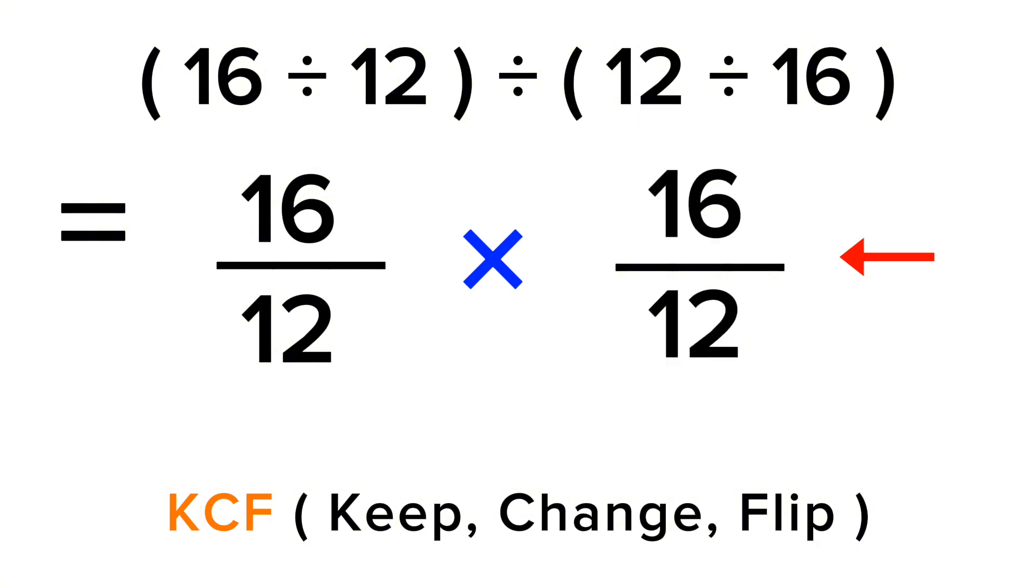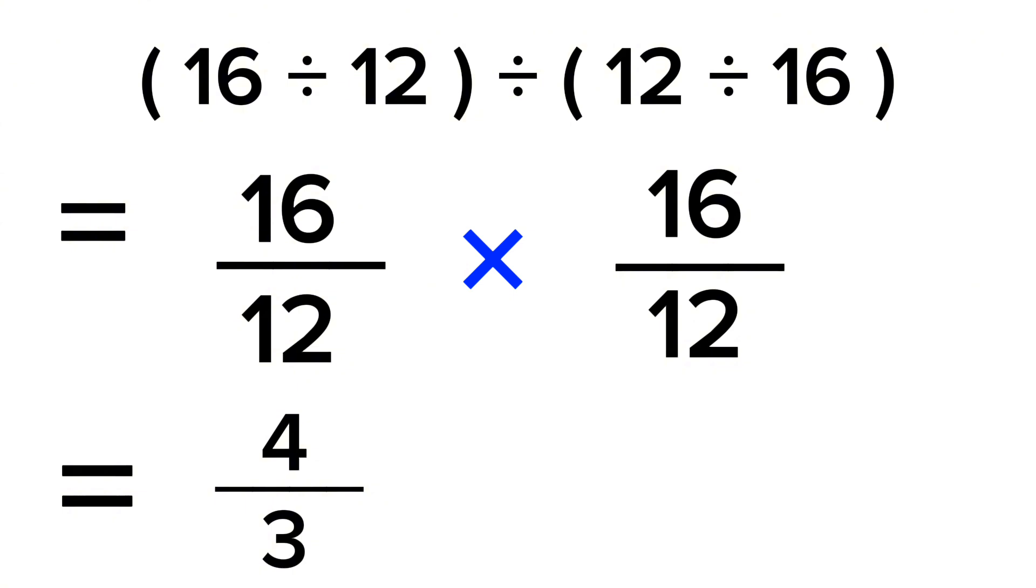Let's simplify more. 16 by 12 can be written as 4 by 3 times 4 by 3, as both the numbers are divisible by 4. So now 4 by 3 times 4 by 3 gives us 16 by 9.